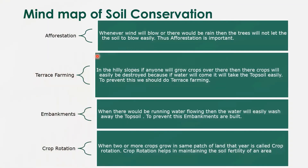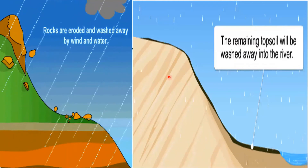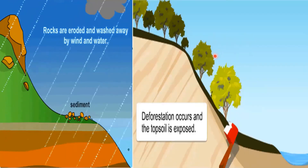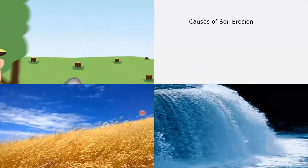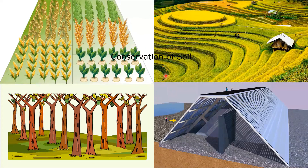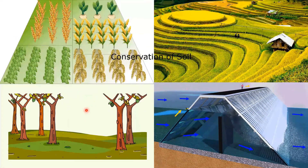Mind map of soil conservation. This is weathering, and these images show the causes of soil erosion. These are the four steps to conserve the soil: crop rotation, terrace farming, afforestation — meaning growing more trees — and building embankments. Thank you everyone.